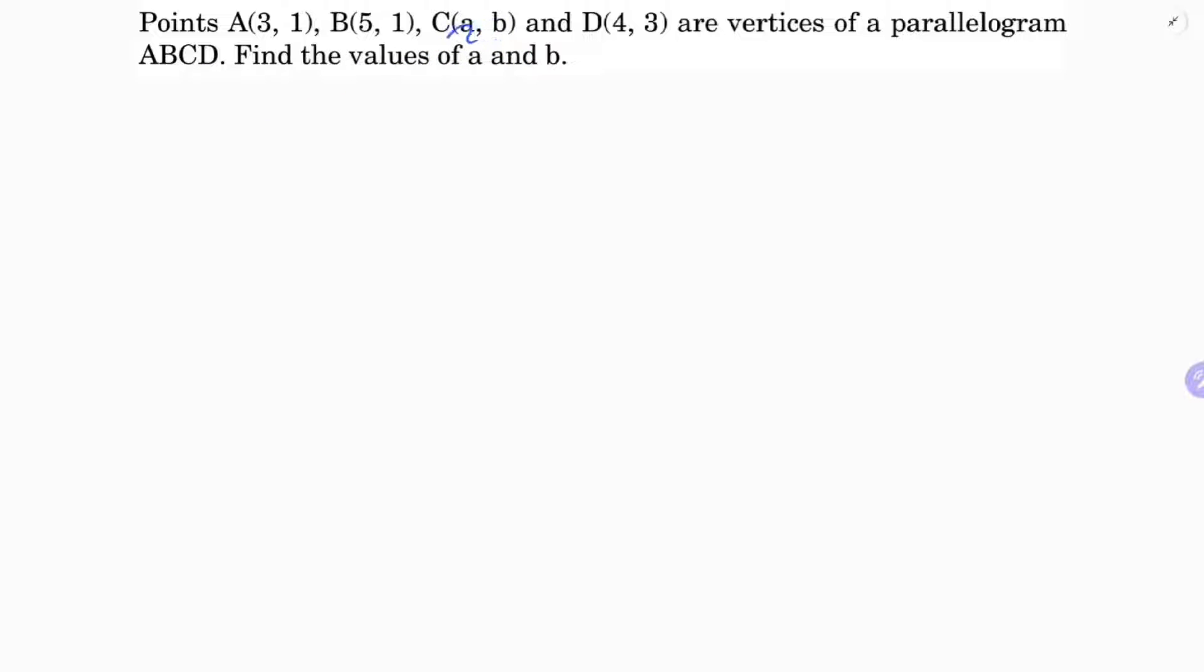In a parallelogram, if values are missing, to find the missing values you can use the property that diagonals bisect each other. So midpoint of AC equals midpoint of BD.